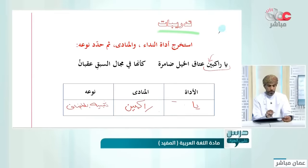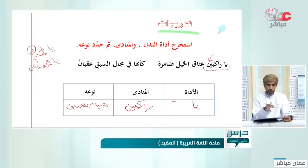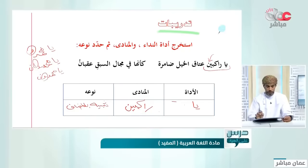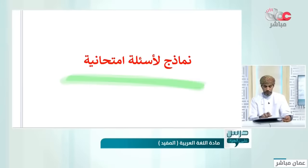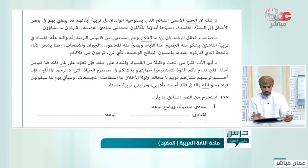بالمناسبة: على ما يرفع به، لما نقول 'يا محمدُ' فمبني على الضم. 'يا محمدان' في المثنى مبني على الألف. 'يا محمدون' في الجمع، الواو هي علامة البناء. إذن 'يا راكبين عتاق الخيل' الأداة 'يا' والمنادى 'راكبين' ونوعه شبيه بالمضاف.